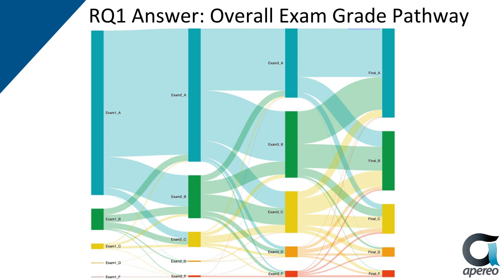This view shows all 949 students' exam grade pathways throughout the course. For example, you can see this group of students — this very light green line — they got an A on exam 3, but they crashed and got a D on the final exam. On the contrary, this group of students got an A on the final exam. With the real dashboard, instructors can click on a specific path and bring up another view showing who those students are, what course group they're in, their final course grade, and their academic and demographic background information.